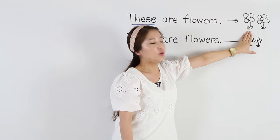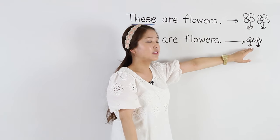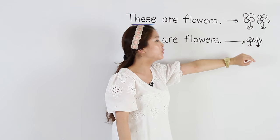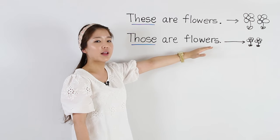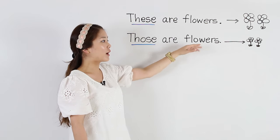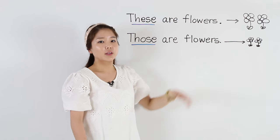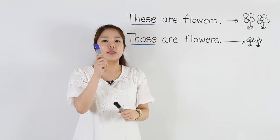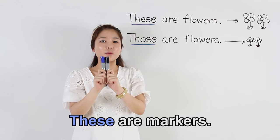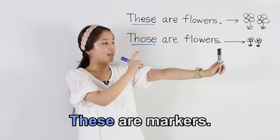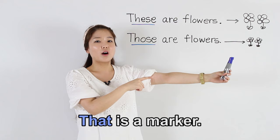There's one that's far away. We say, that is a flower. But again, if there are two flowers, we use those. Those are flowers — they're far away. Let's look at another example: This is a marker. These are markers. That is a marker. Those are markers.